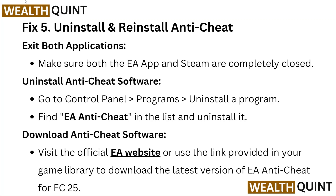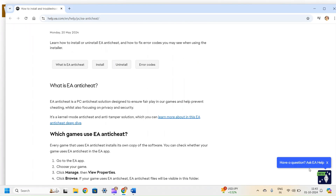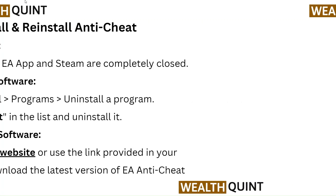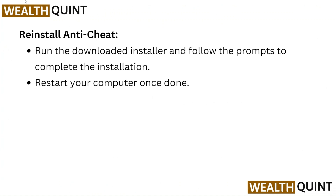Download anti-cheat software by visiting the official EA website, or use the link provided in your game library to download the latest version of EA Anti-Cheat for FC25. Run the downloaded installer and follow the prompts to complete the installation. Restart your computer once done.